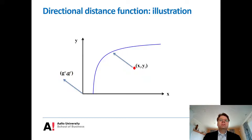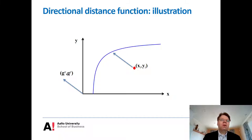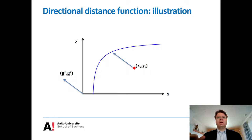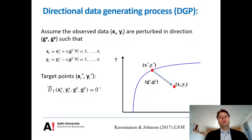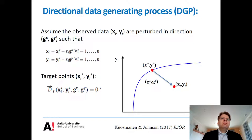In this lesson, we operate in the general case of the directional distance function. The direction vector G is a vector used to project observations to the frontier in a certain direction. We take a different stance on this question of direction, discussing recent work with Andrew Johnson published in the European Journal of Operational Research, where the direction vector is treated as an explicit characteristic of the data generating process.